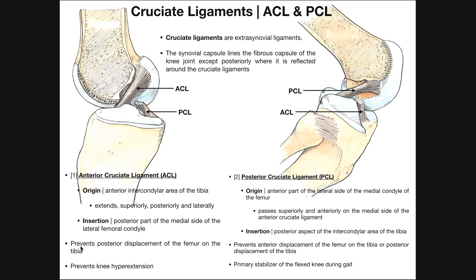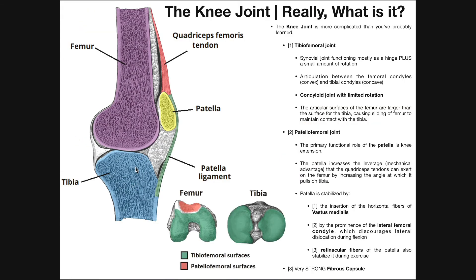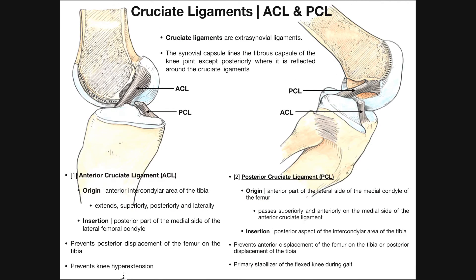The major function of the ACL is that it prevents posterior displacement of the femur on the tibia — another way to say this is it prevents anterior displacement of the tibia on the femur. If the femur is static, it prevents the tibia from translating forward; if the tibia is static, it prevents the femur from translating posteriorly. The ACL also prevents knee hyperextension.